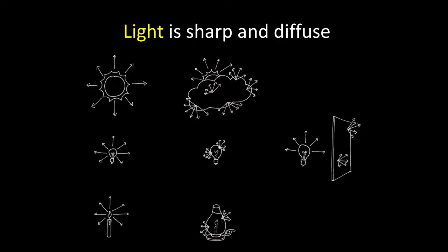There are four basic principles that will help you understand how to sculpt light. The first principle is that light is sharp and light is diffuse. On a bright sunny day, the light that comes from the sun is considered sharp. When a cloud jumps in front, it's diffuse.